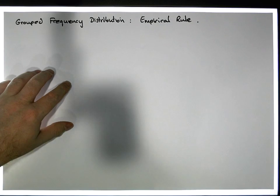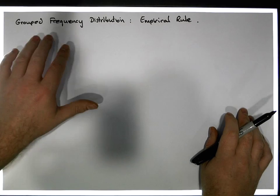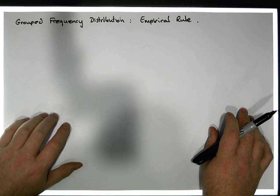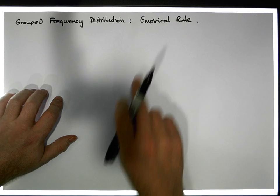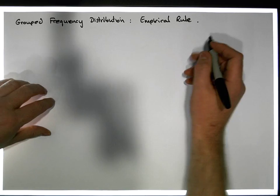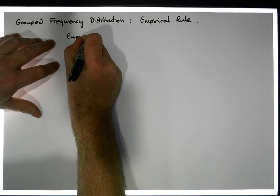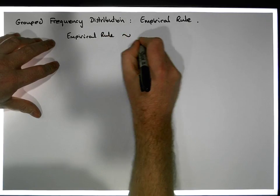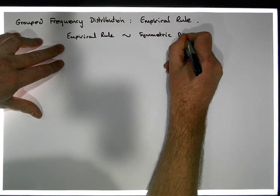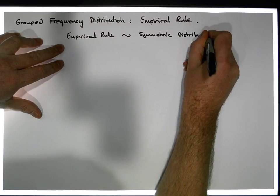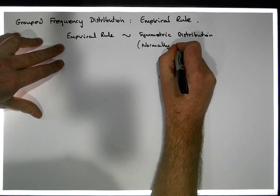Hi guys, this is Jonathan Lambert with the Mathematics Development and Support Service at the National College of Ireland. In this short video we're going to be dealing with group frequency distributions and, more importantly, what's known as the empirical rule. The empirical rule is a rule associated with symmetric distributions, and more importantly, with distributions that are normally distributed.